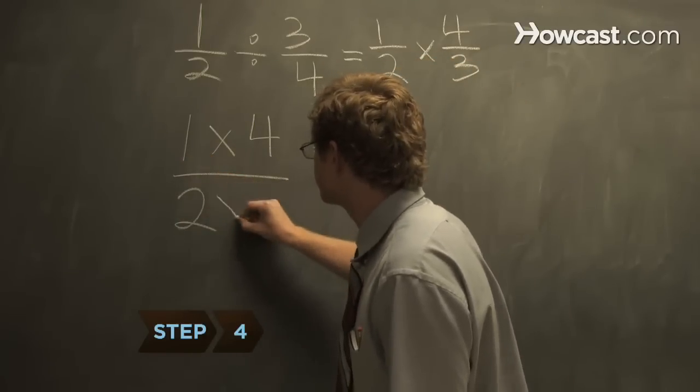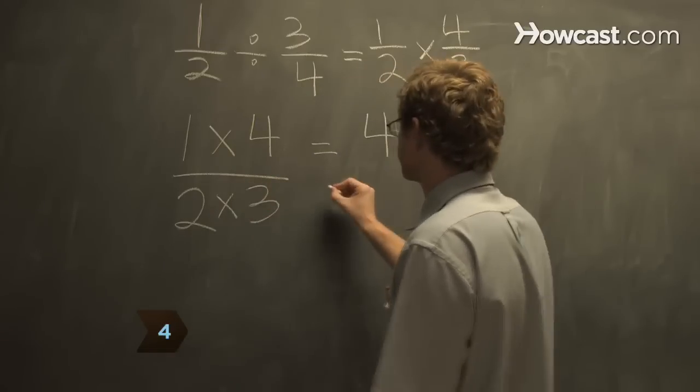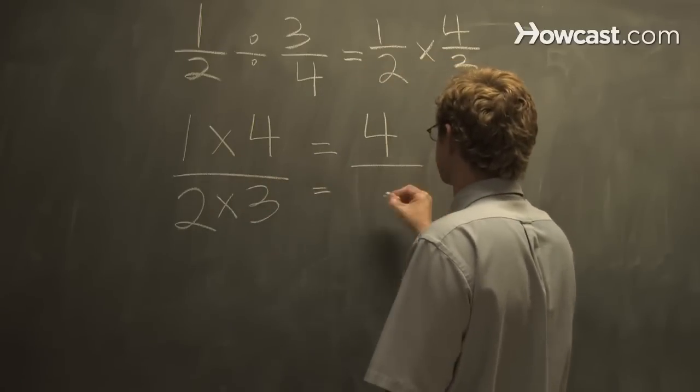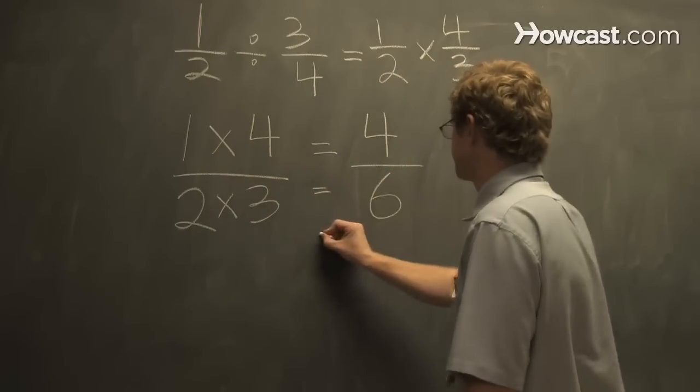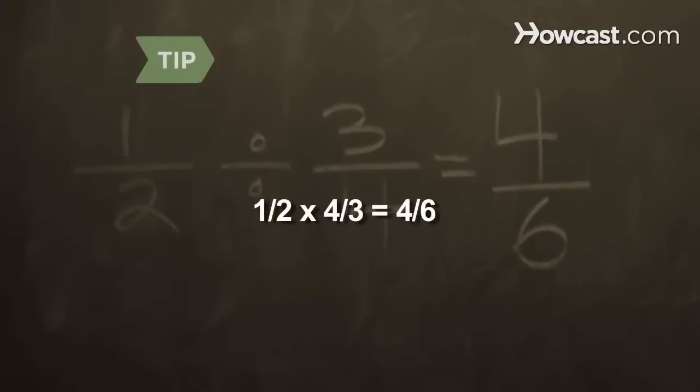Step 4: Multiply the bottom two numbers in the fractions to get the bottom number in the answer, which is known as the denominator. The result in the example is 4/6.